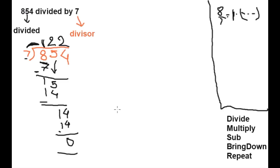This is the whole solution. My intention was only to clarify these five steps. Now we will correlate these five steps with polynomial function — it will be easy for us to solve. Here we got 122 as the quotient and 0 as the remainder. Now let's come to polynomial function.